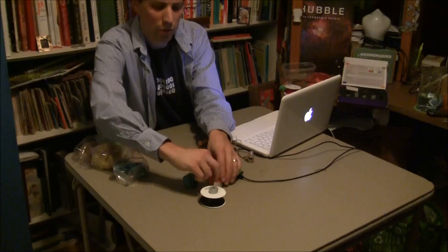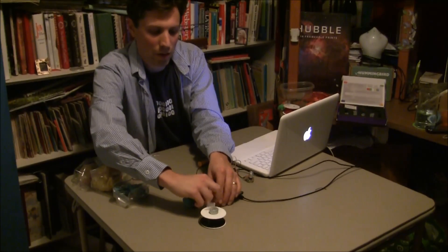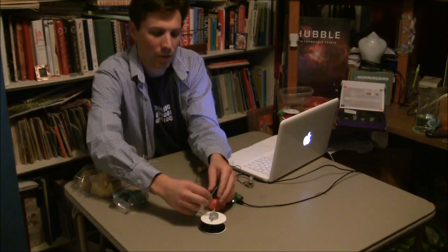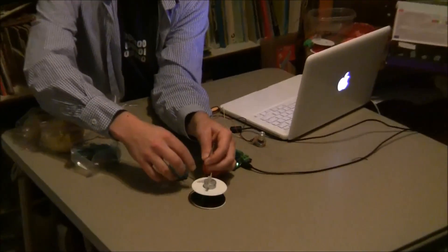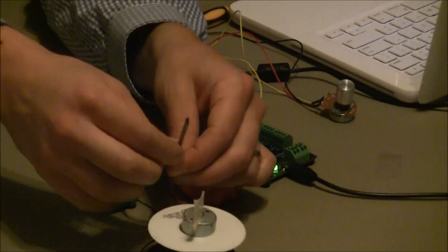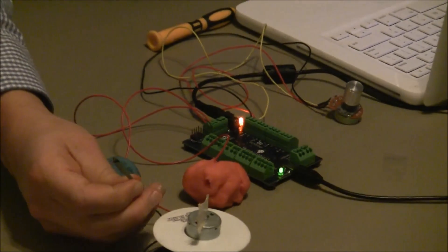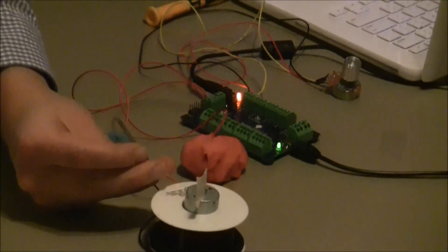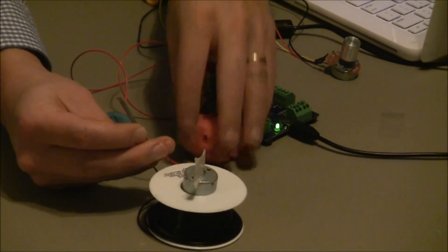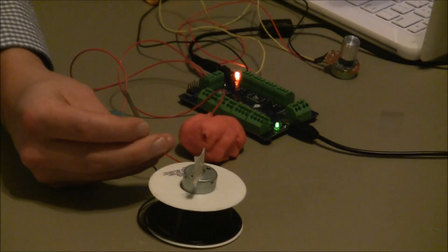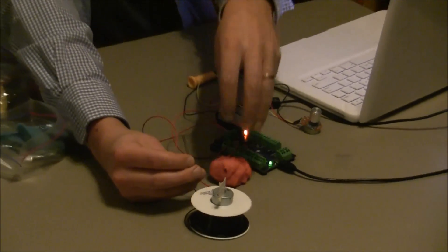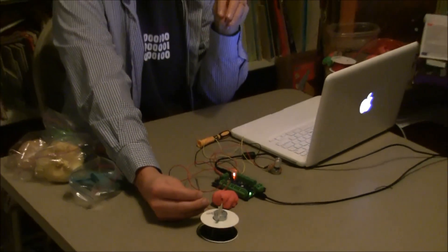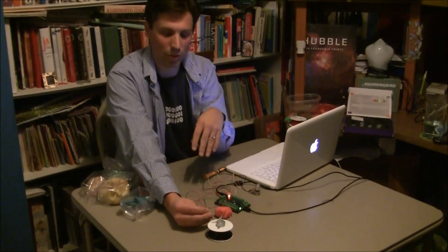Now, you may notice that the motor terminals have these long pieces of metal attached to them. That's because the conductive Play-Doh is not a perfect conductor the way a wire is. And so, the more surface area is in contact with the Play-Doh, the better the current flows to the motor.